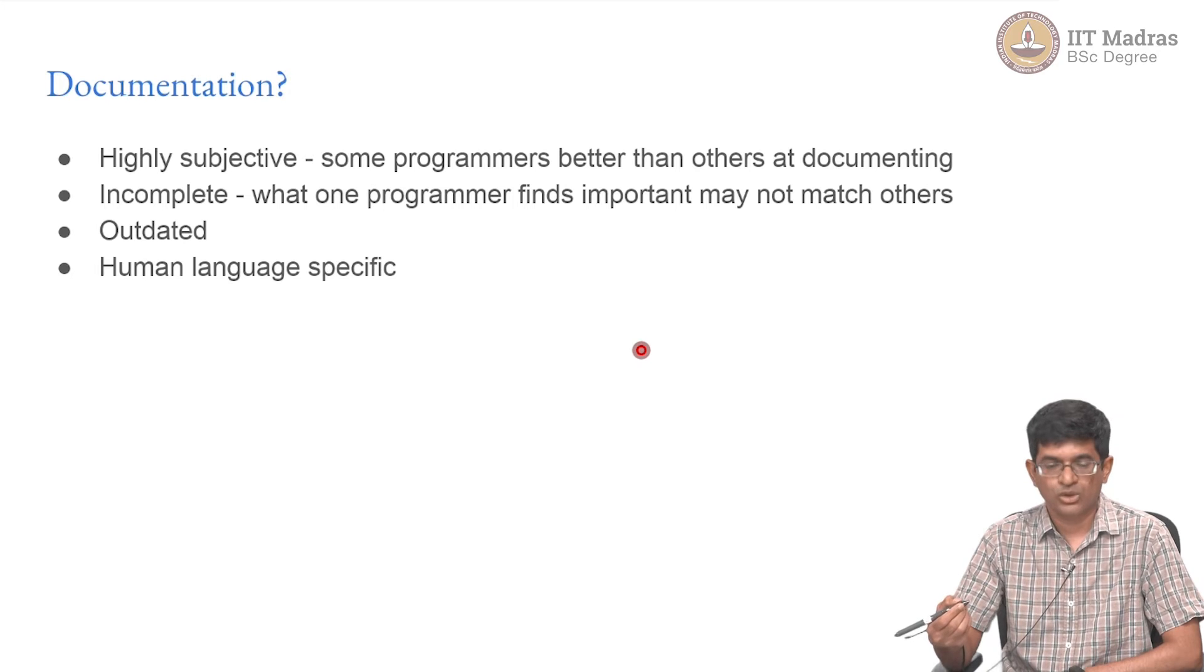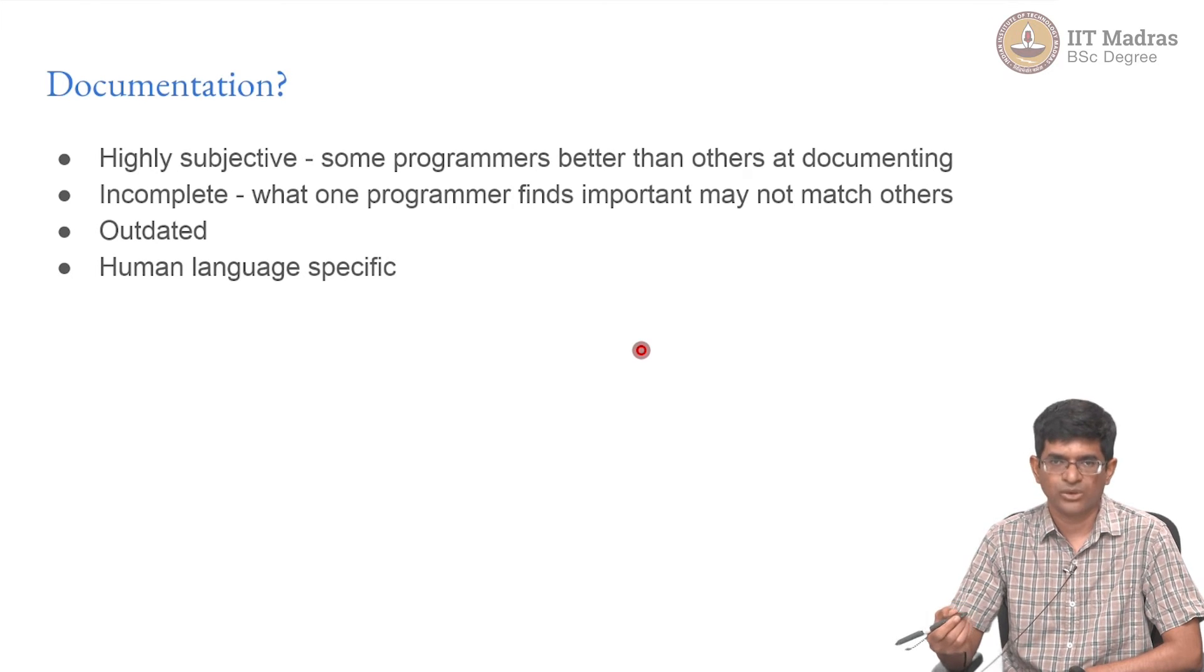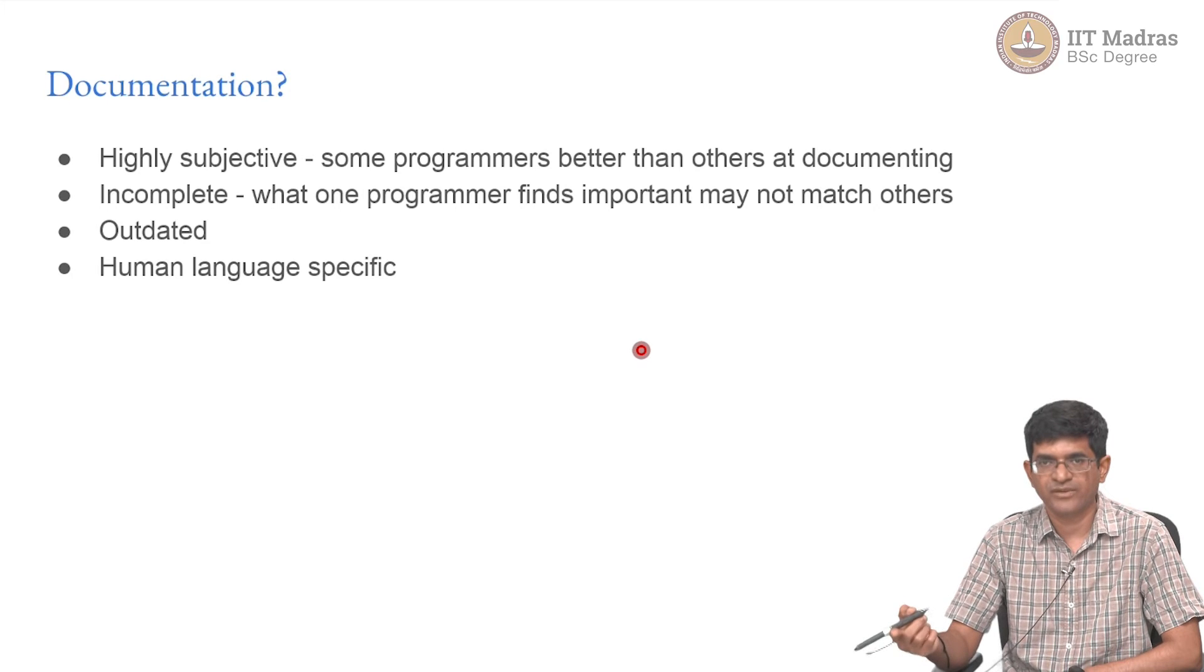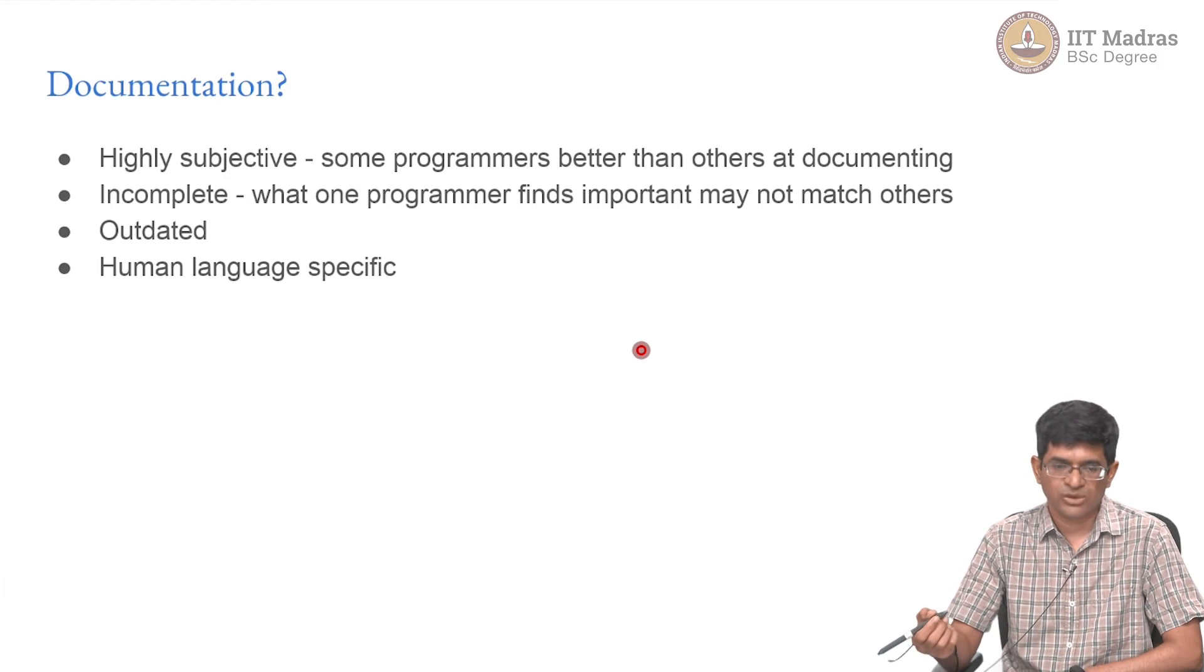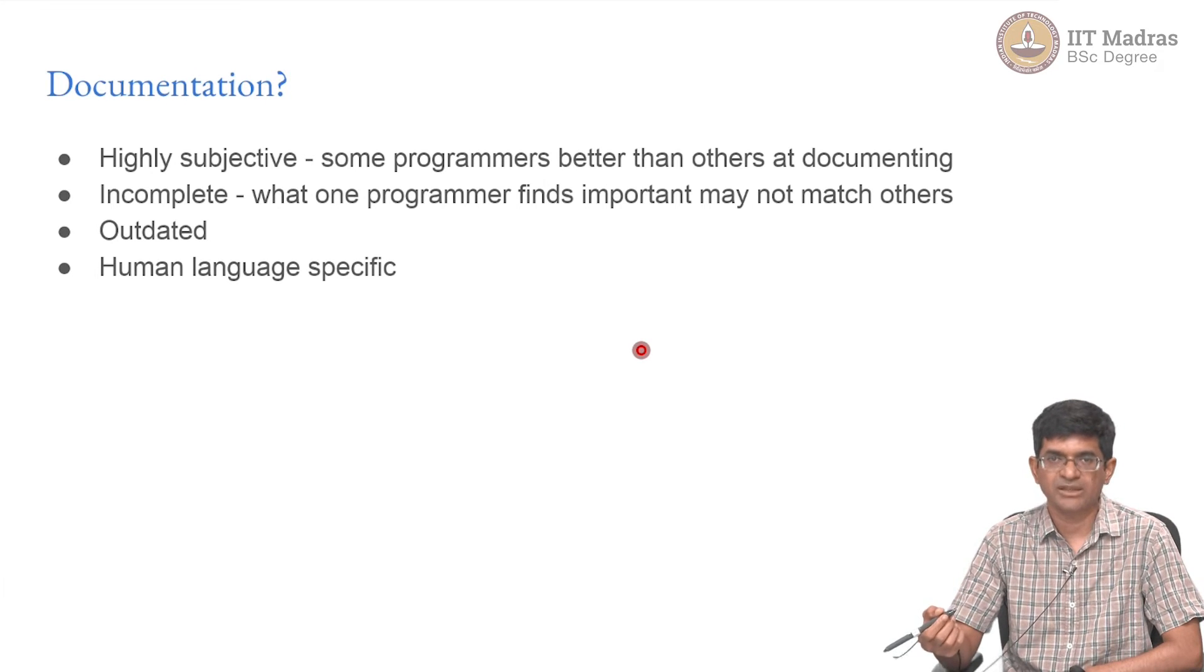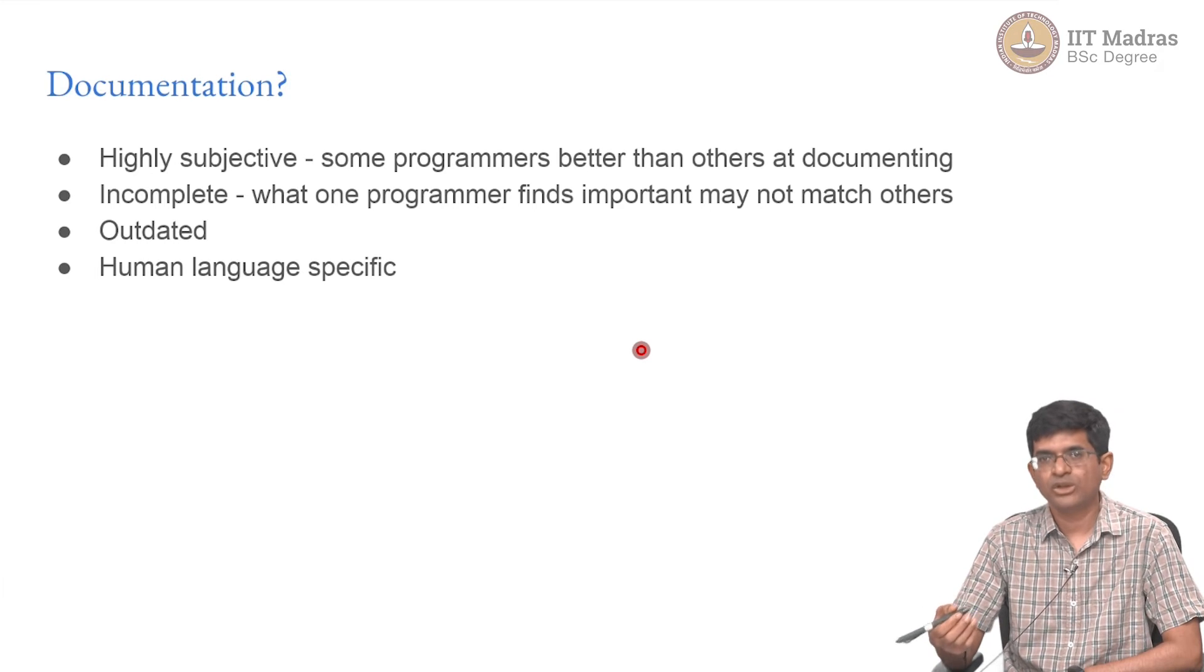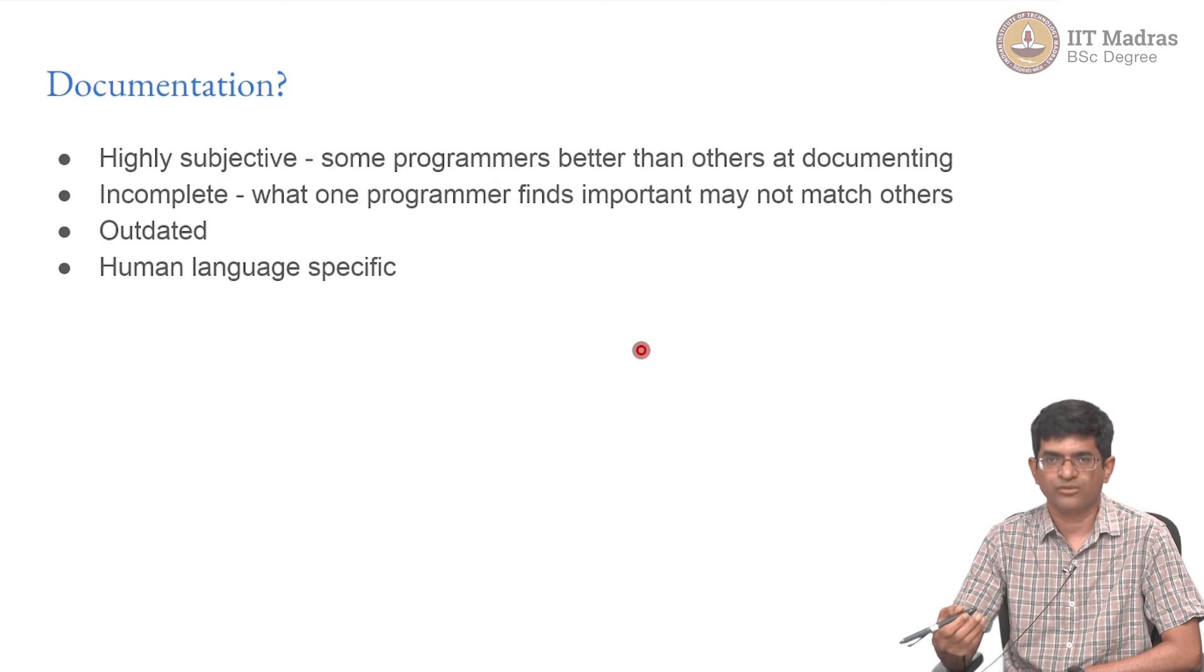Documentation could also be incomplete, meaning that the person who is writing the code might find that this is all self-evident, there is nothing really to document. But the next person may wonder why is that parameter there, why is this variable being used in this fashion? It may not be obvious to another person looking at it. It may be outdated, which is a really unfortunately common situation. And the other issue, of course, is that documentation in general is human language specific. Whatever documentation you might have in one particular language - let's say you are a Chinese speaker who does not have a good command on English - you are going to struggle with English language documentation. Can you translate it? Sure, somebody could do the translation. Now you are potentially opening up more problems because the translation may not be perfect. So documentation, while necessary, it would be good to see if there are other ways by which I could have a more foolproof way of describing an API.